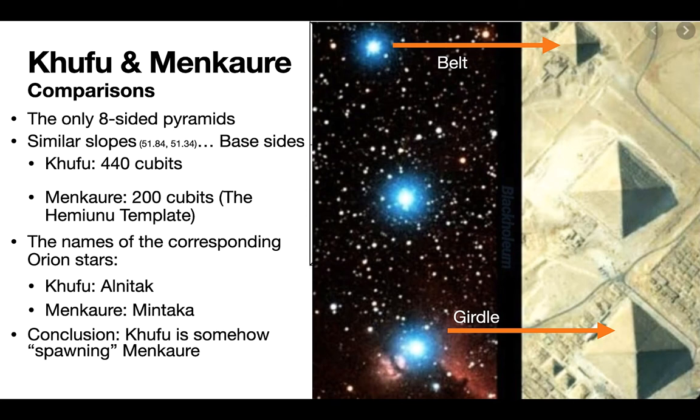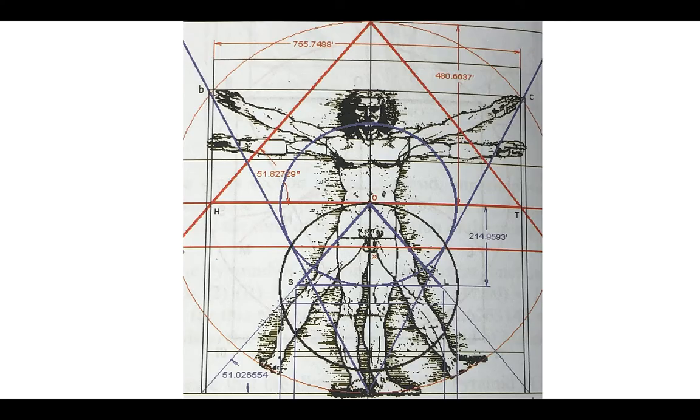And so, this connection that da Vinci's trying to show us is there too. There's a connection between Khufu and Menkaure. And I'm suggesting that the Khufu pyramid spawns the Menkaure pyramid. It's got the Hemayunu template, which has got the same size as the base of the Menkaure pyramid. So, somehow I think again that Khufu is spawning Menkaure.